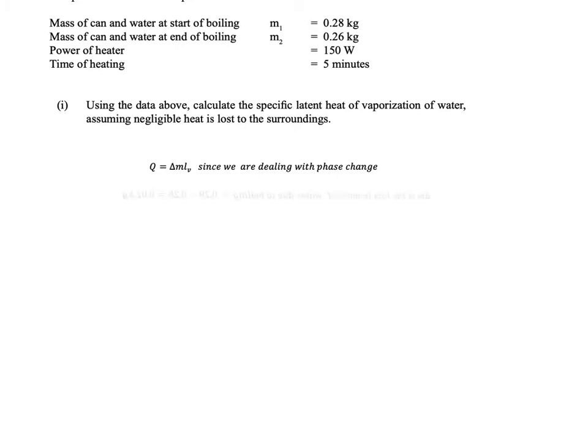Don't be scared about the delta m. The delta m is just the loss in mass of water due to boiling, so that's 0.28 at the beginning, 0.26 at the end, so we've lost 0.02 kilograms due to boiling.